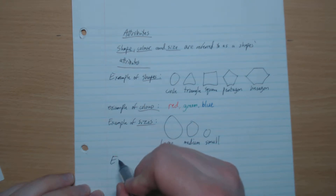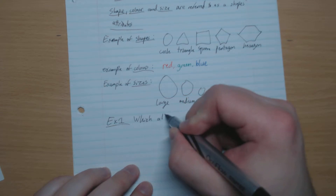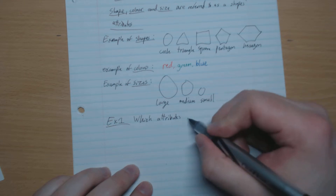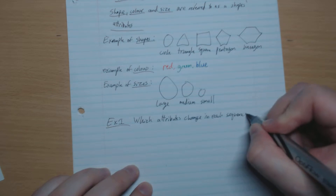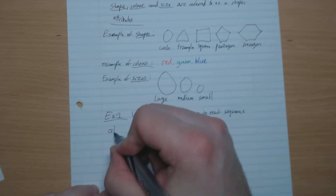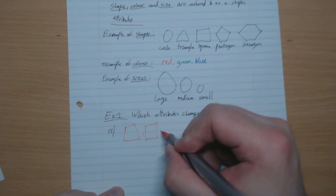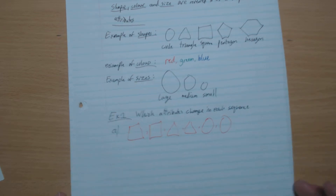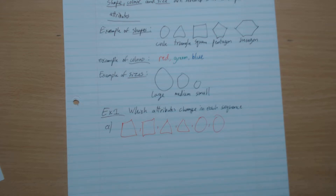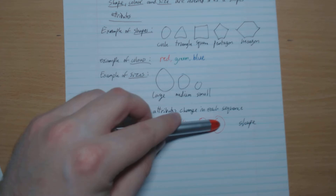Excellent. Let's go straight into some examples. Which attributes change in each sequence? What's the attribute that is changing? The shape is changing. You notice that we've got different shapes here. You notice they're all the same color, and they're all the same size, more or less.